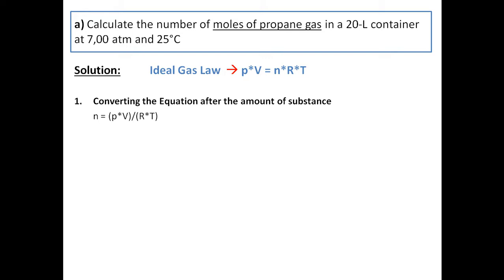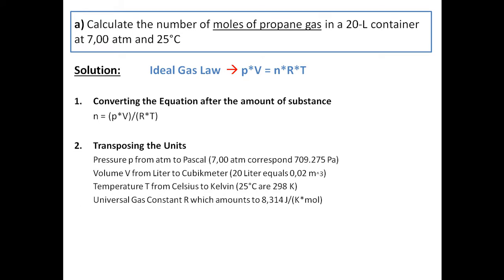With pressure, volume, the universal gas constant R and the temperature T. But first we need to transpose the units, which means pressure P from atm to Pascal, volume V from liter to cubic meters and the temperature from Celsius to Kelvin.